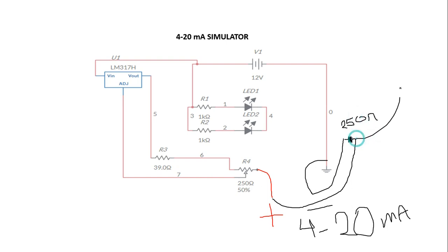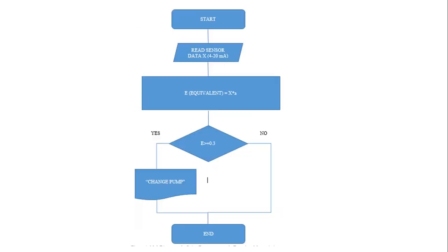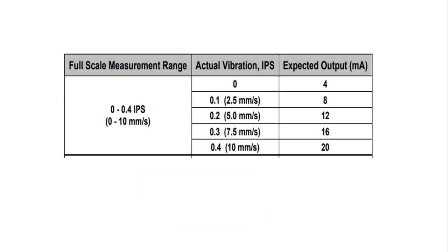Here we are going to have the input for our Arduino. This input is going to be from 1 to 5 volts, and this 1 to 5 volts is going to be proportional to the vibration, to that inch per second that I explained in the last video.